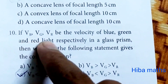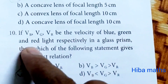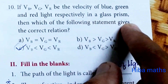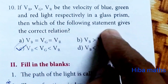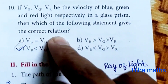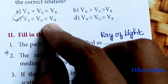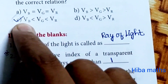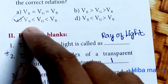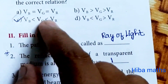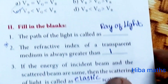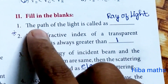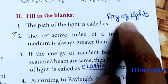Tenth question: if vb, vg, vr be the velocity of blue, green and red light respectively in a glass prism, then which of the following statement gives the correct relation? Red light travels fastest, then green, then blue. So vb is less than vg, which is less than vr.